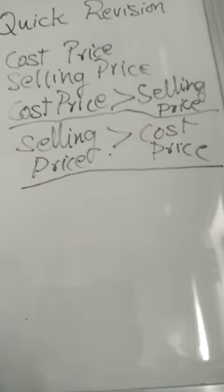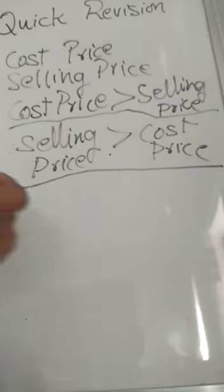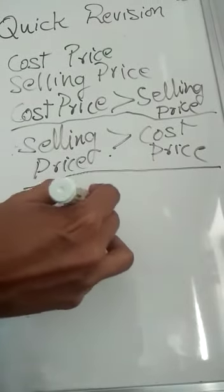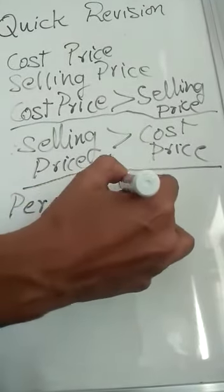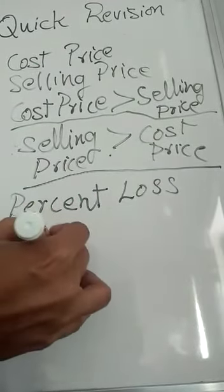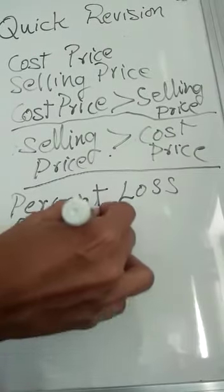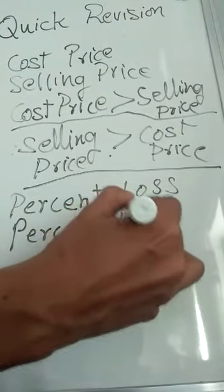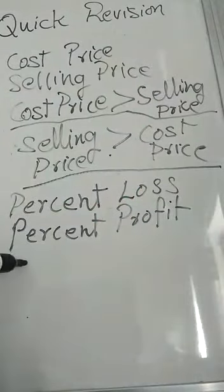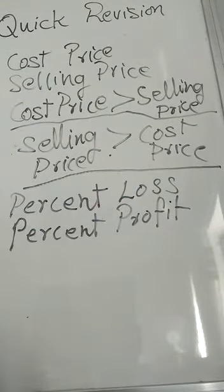And then what did you learn? You learned percentage — profit percent and loss percent. Profit percent and loss percent is used to compare which transaction is more profitable. Gain means profit, so percentage of profit and percentage of loss — you also learned how to find those out.